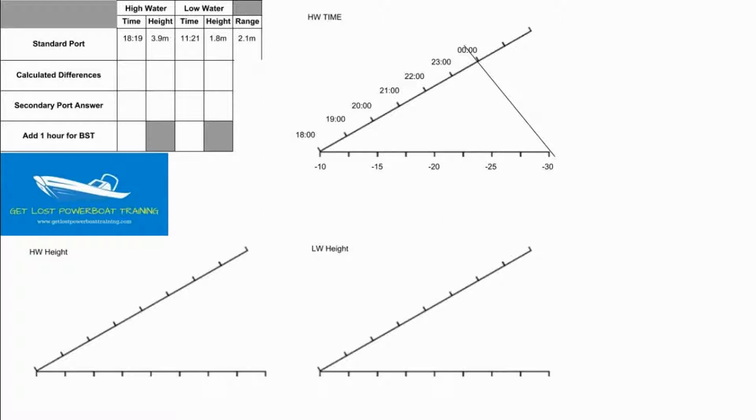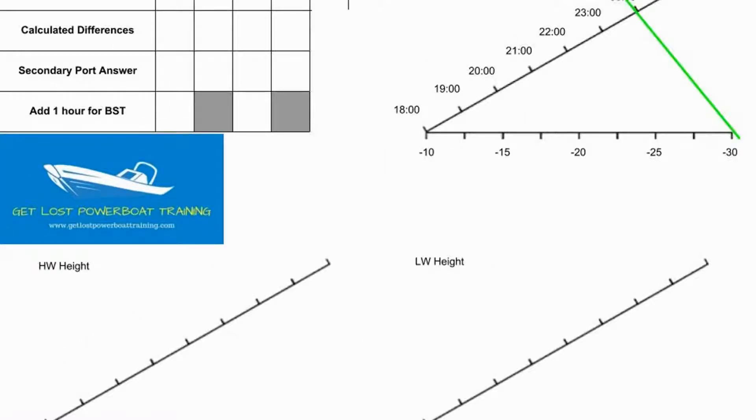In order to find our time difference now that we've completed our triangle we have to take a parallel line of this line and transpose it down the timescale to the time of our standard port. Reading off the new parallel line we can see that at roughly 1819 at the standard port we would have a difference of about minus 12 minutes at the secondary port. So we're going to enter that minus 12 in the calculated differences box on our table and then we can make the calculation and give ourselves the answer for the time of high water at the secondary port.